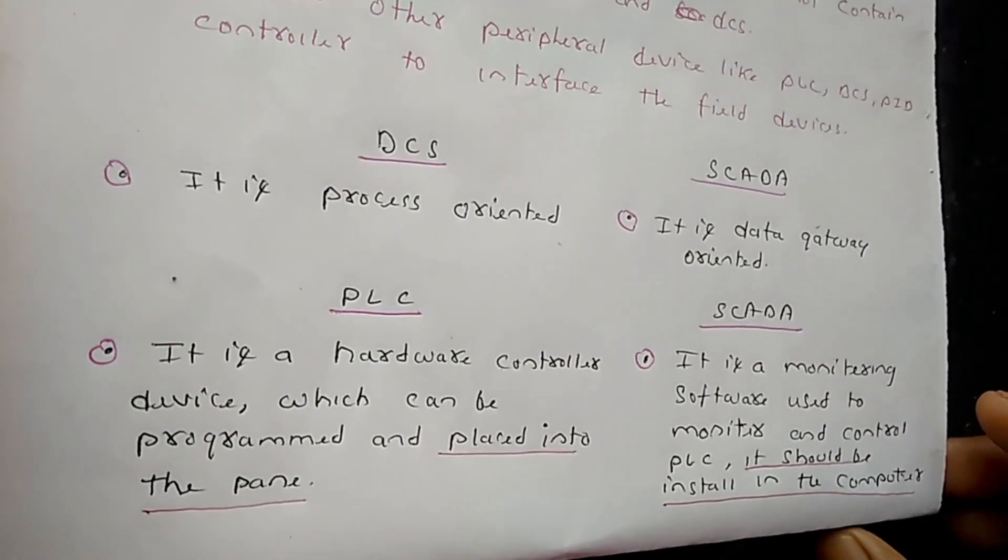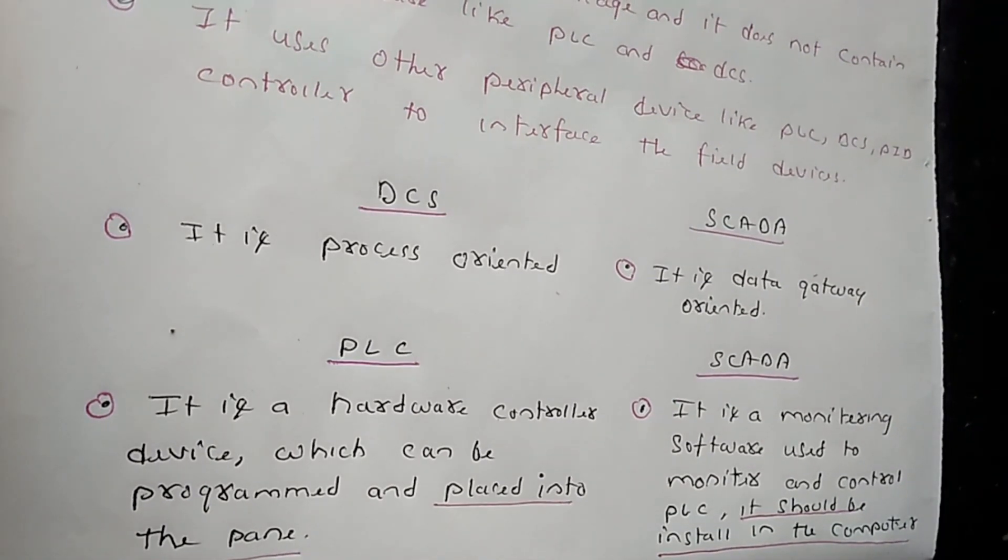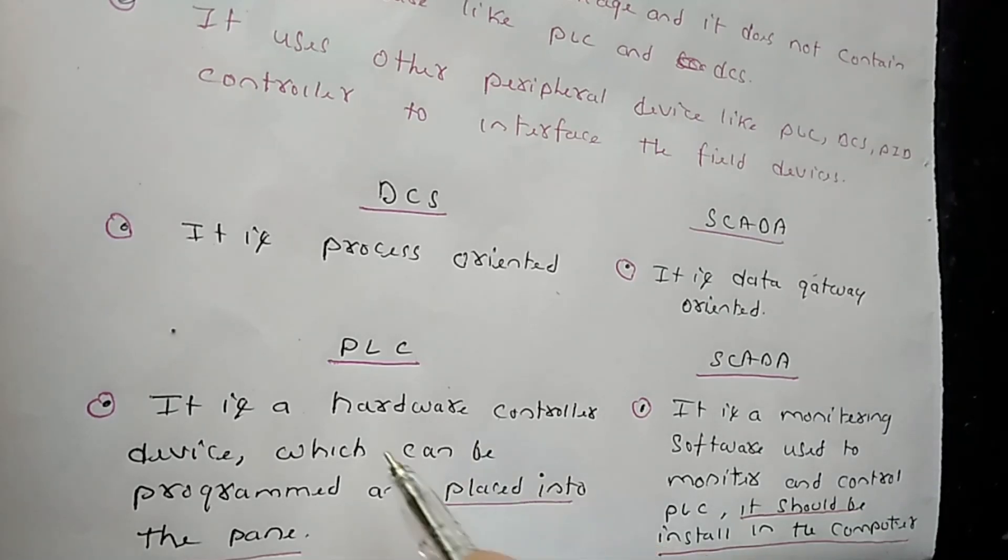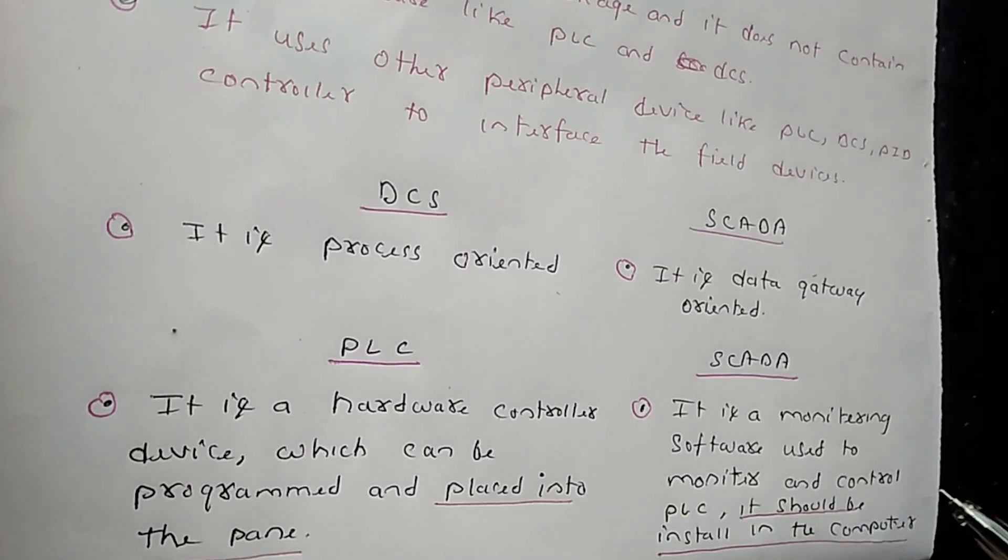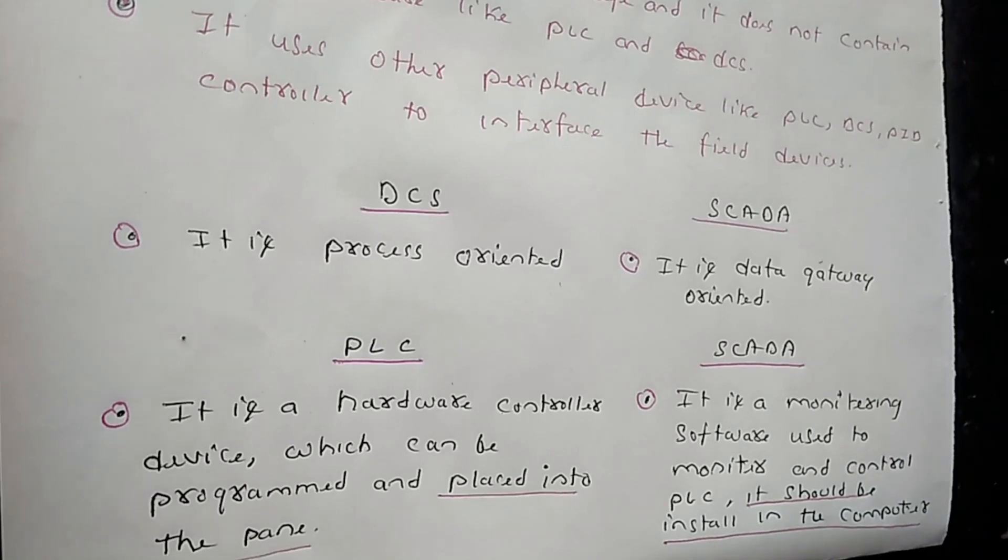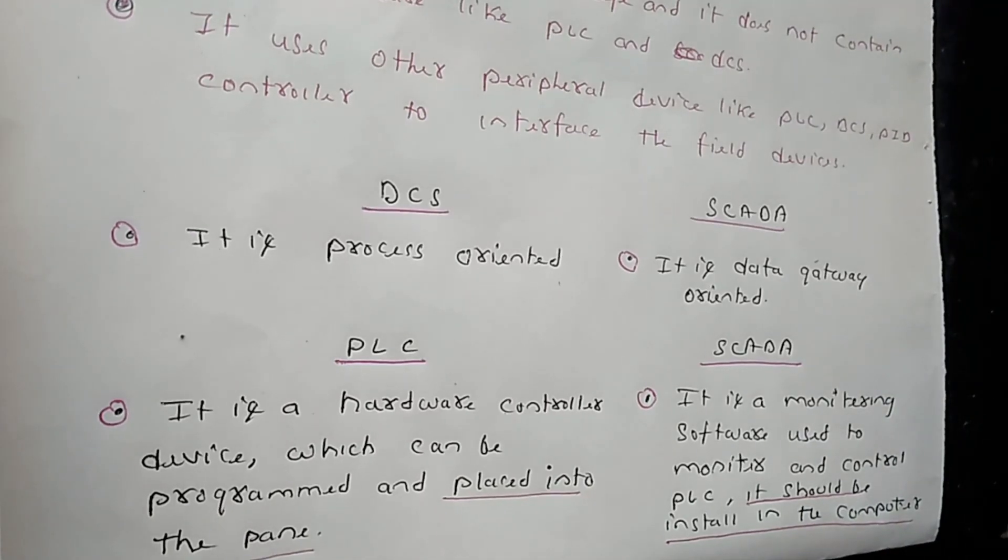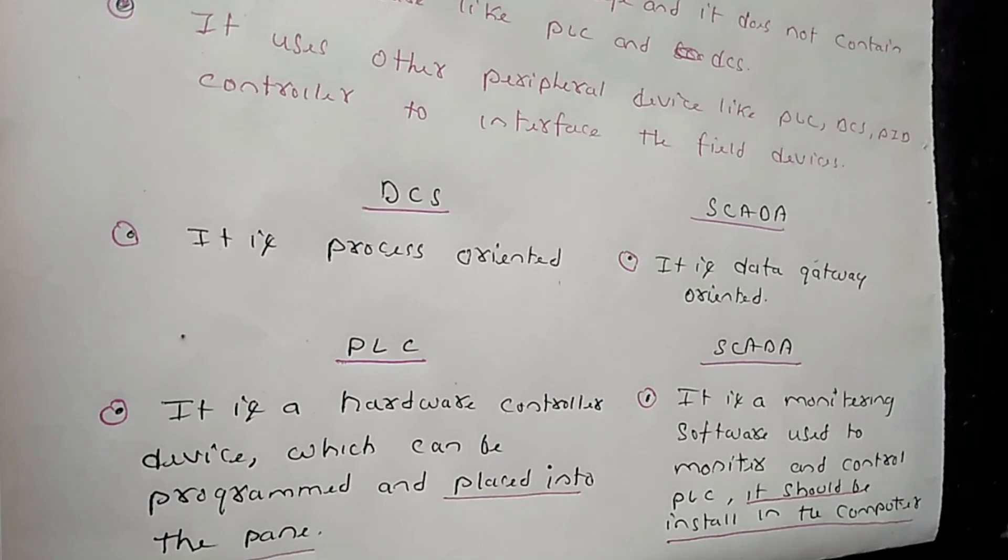What is the difference between PLC and SCADA? PLC is a hardware controller device which can be programmed and placed in the field. It's a hardware controller device that can be programmed. SCADA is monitoring software used to monitor and control PLC. It should be installed in a computer. So you can understand what is the difference between PLC and SCADA, what is the difference between DCS and SCADA, and what is SCADA.